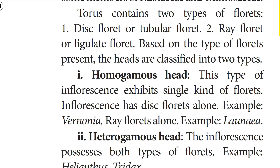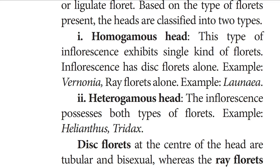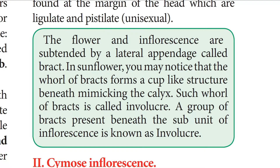In the heterogamous head, both disc and ray florets are present. Example: Helianthus and Tridax. Disc florets are present at the center and are tubular with bisexual flowers, whereas ray florets at the margin are ligulate and pistillate (unisexual). The flower and inflorescence are supported by lateral appendages called bracts. In sunflower, a whorl of bracts forms a cup-like structure below the inflorescence — this is the involucre.